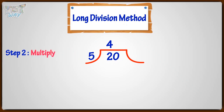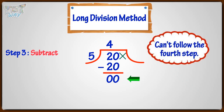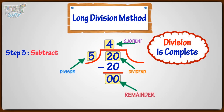The second step is multiply. Multiply 5 with 4 and write the multiple below. The third step is subtract. Subtract and write the difference below. Now we have no number in the dividend to bring down, so we can't follow the fourth step and the division is complete. 5 is divisor, 20 is dividend, 4 is quotient, and remainder is 0. So, 20 divided by 5 is 4.